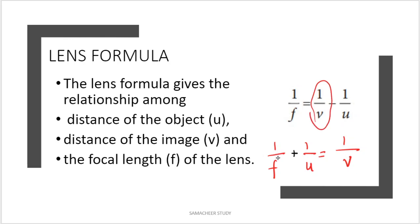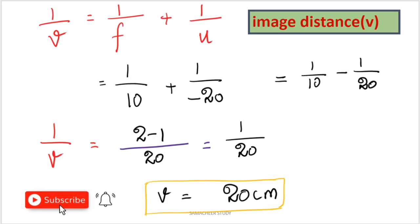Rearranging: 1 by v equals 1 by f plus 1 by u. We substitute the values using sign convention: 1 by v equals 1 divided by plus 10 plus 1 divided by minus 20.